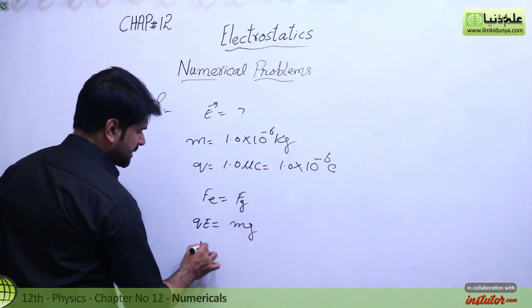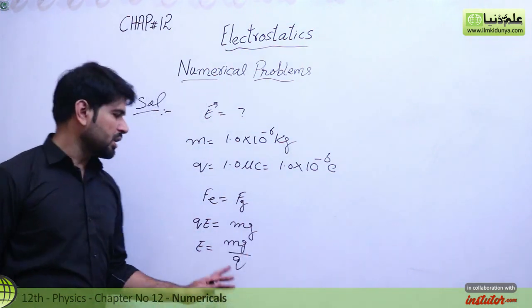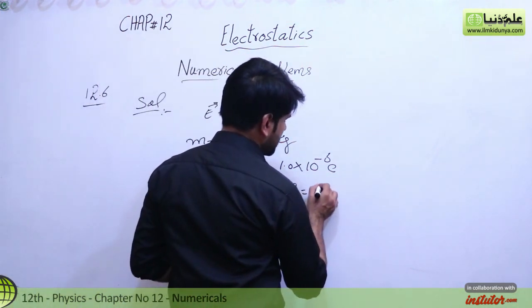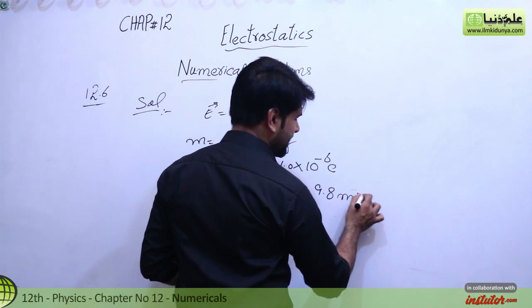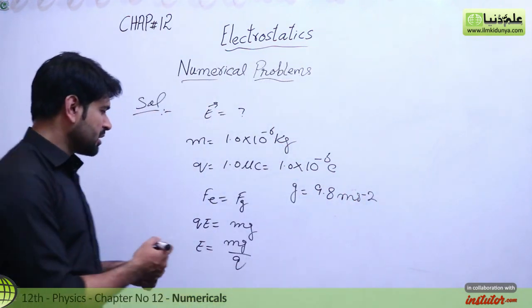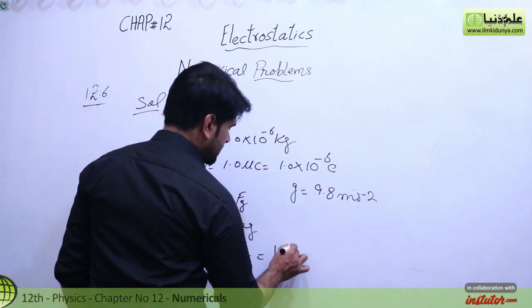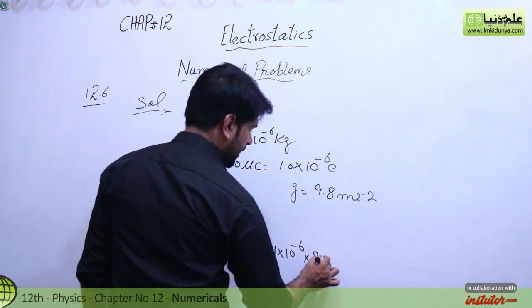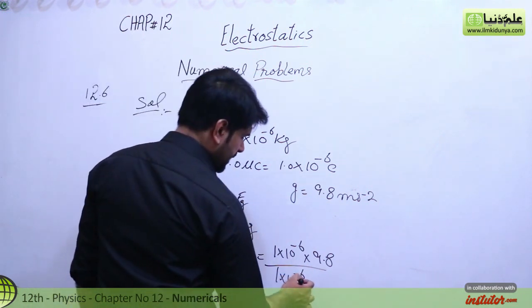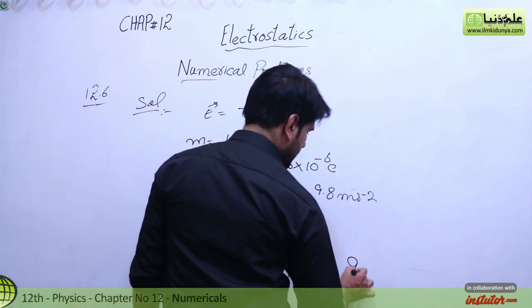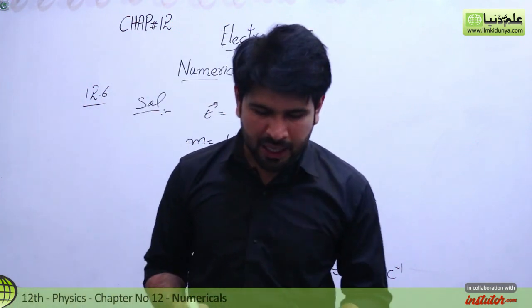Therefore, the electric field strength E equals m g divided by q. The gravitational acceleration g value is 9.8 meters per second squared. We put the values: m is 1 times 10 raised to power minus 6, g is 9.8, divided by q which is 1 into 10 raised to power minus 6. This cancels, so we get 9.8 newton per coulomb.